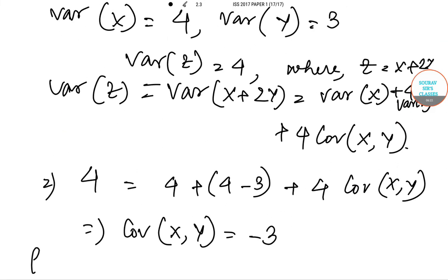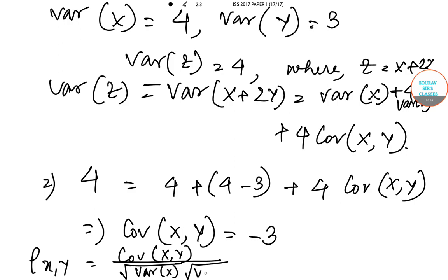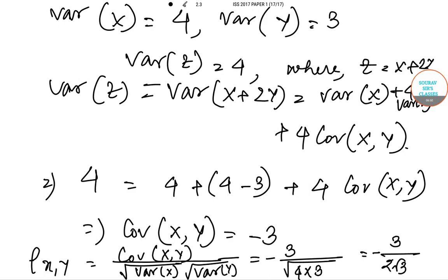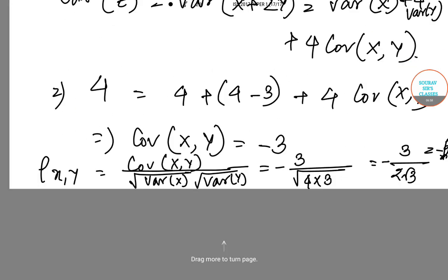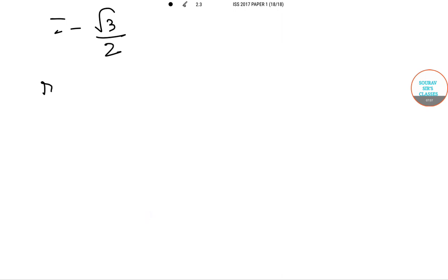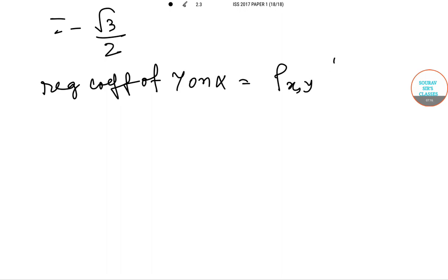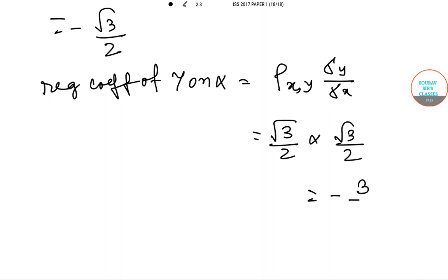So rho xy equals covariance of x and y divided by root over variance of x multiplied by root over variance of y, which equals minus 3 divided by root over 4 times root over 3, giving minus root 3 by 2. The regression coefficient of y on x equals rho xy multiplied by sigma y by sigma x, which equals minus root 3 by 2 multiplied by root 3 by 2, equals minus 3 by 4.